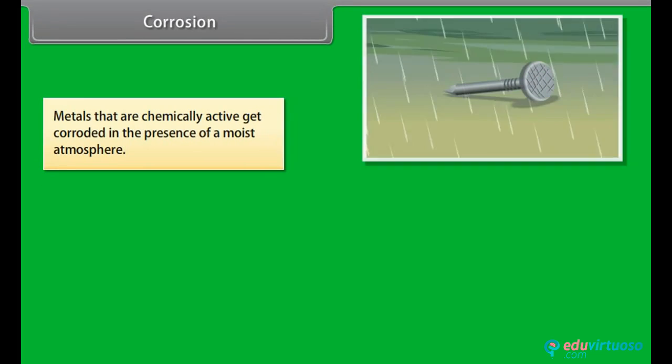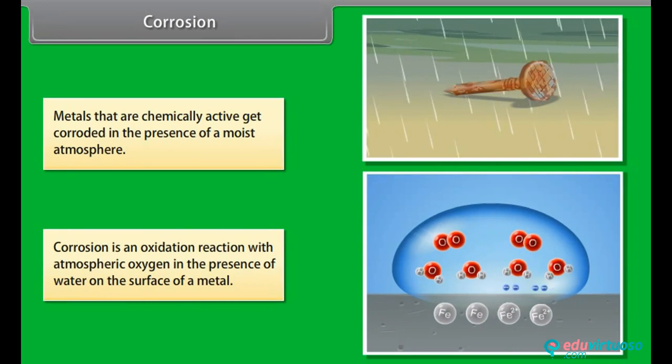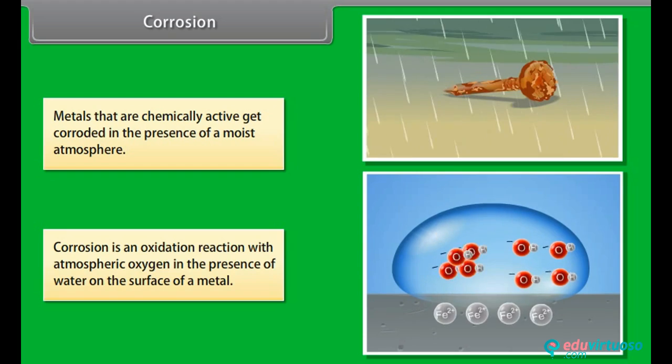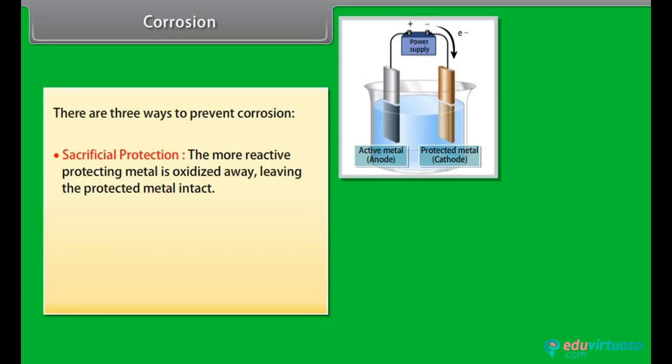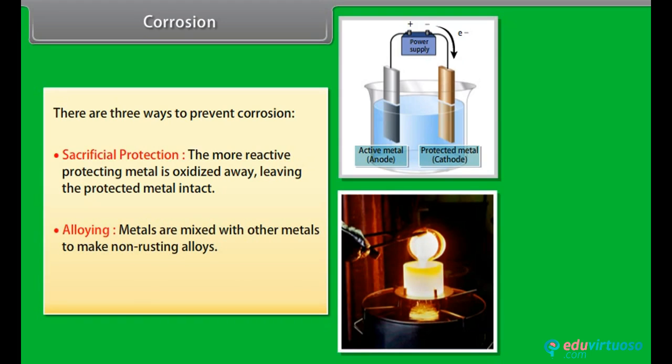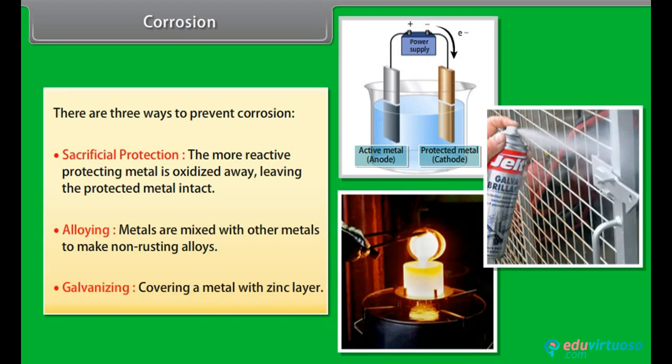Corrosion. Metals that are chemically active get corroded in the presence of a moist atmosphere. Corrosion is an oxidation reaction with atmospheric oxygen in the presence of water on the surface of a metal. For example, iron and aluminum corrode. However, non-reactive metals like gold, platinum, mercury do not corrode. There are three ways to prevent corrosion: Sacrificial protection where the more reactive protecting metal is oxidized away, leaving the protected metal intact; Alloying where metals are mixed with other metals to make non-rusting alloys; Galvanizing where a metal is covered in a thin zinc layer. This layer is produced by electrolytic deposition.